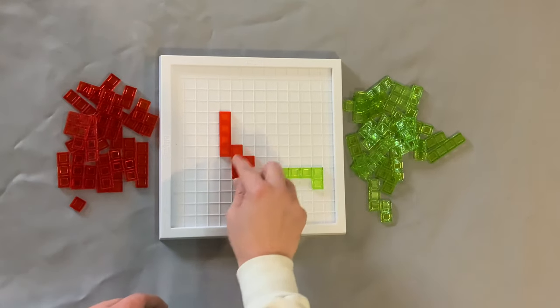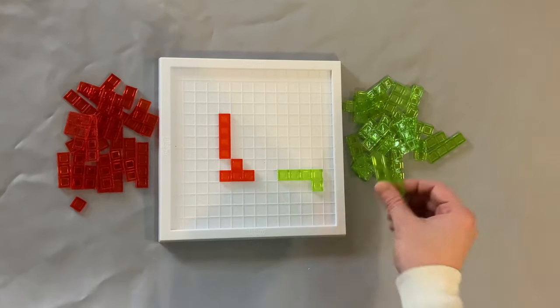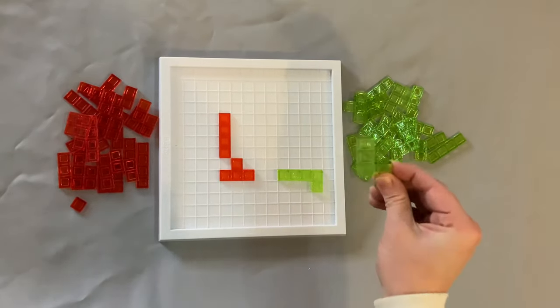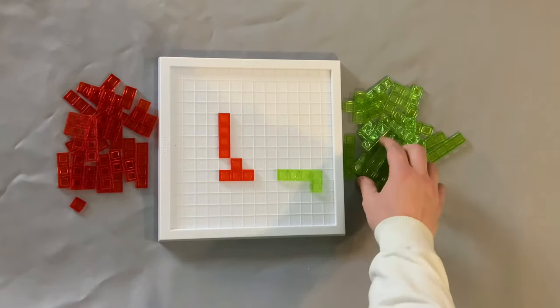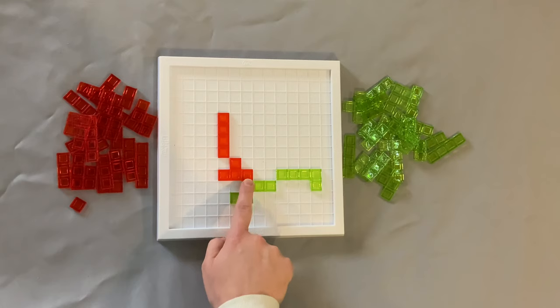Pieces the same color can never ever ever touch on their sides, not even if there's a fire. However there are absolutely no restrictions on touching the other player's color. As you can see this green and red are touching.